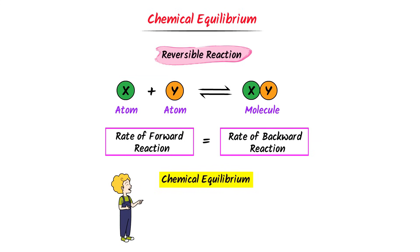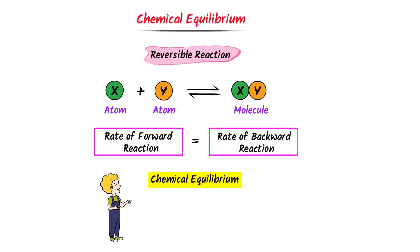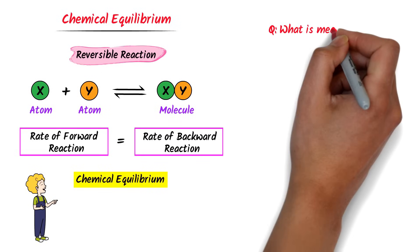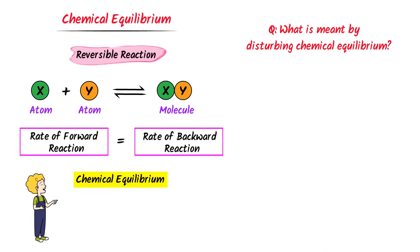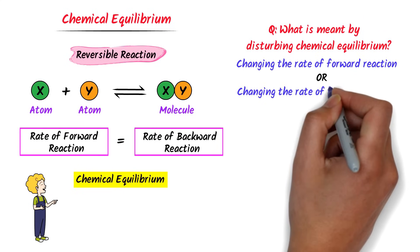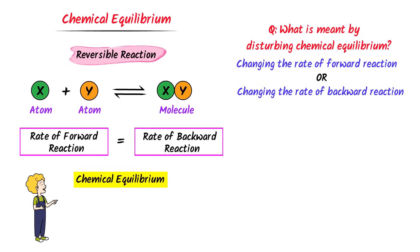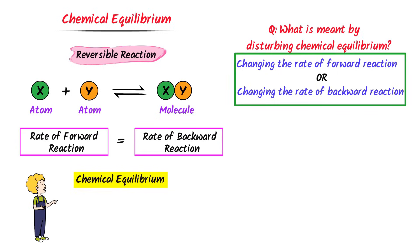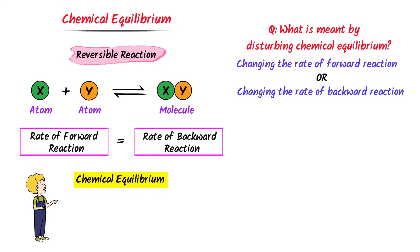Here, let me ask you one important question which I often ask: what is meant by disturbing chemical equilibrium? When we say disturbing chemical equilibrium, it means that we are disturbing or changing the speed of either the forward reaction or the backward reaction. So remember that whenever I say disturbing the chemical equilibrium, it means that I am disturbing the speed of either side.